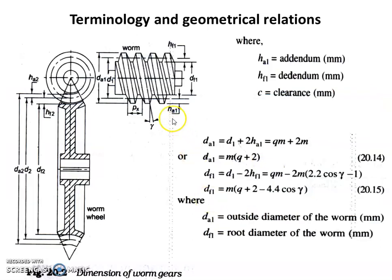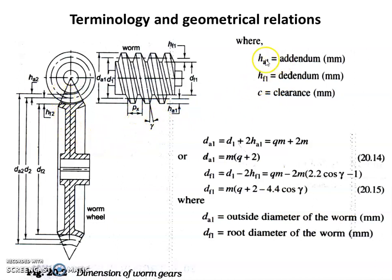In the geometrical relationships, referring to this figure, we have the Worm and the Worm wheel. For the Worm, HA1 represents the addendum and HF1 represents the dedendum. The subscript 1 represents the Worm; subscript 2 represents the Worm wheel. Clearance C is also shown. So HA1 is the addendum of Worm.